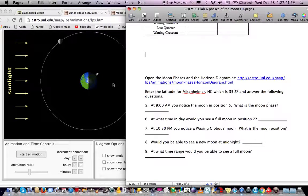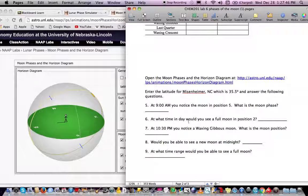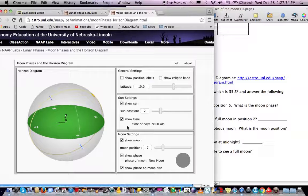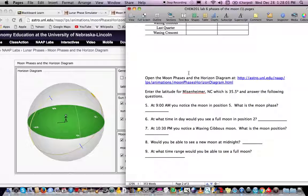All right, the next part involves a different app, and that's this app here. And here it asks you to put in the latitude for Meisenheim North Carolina, which is 35.5 degrees, and then answer some questions. I'm going to use 10 degrees, so my answers are going to be slightly different to yours, or actually quite different to yours. So you're going to have to do this with the thing set at 35.5.